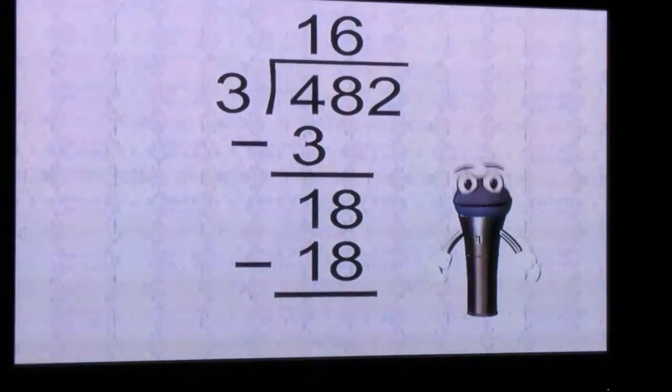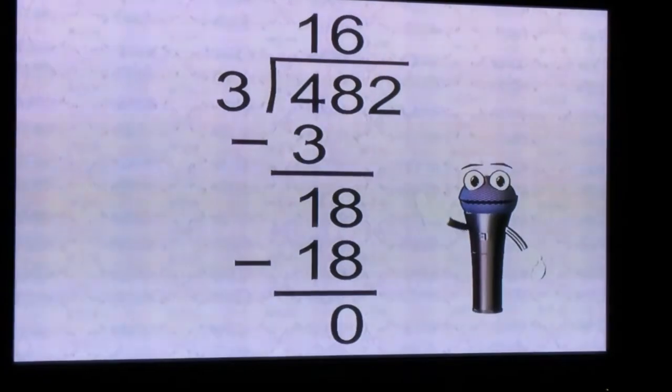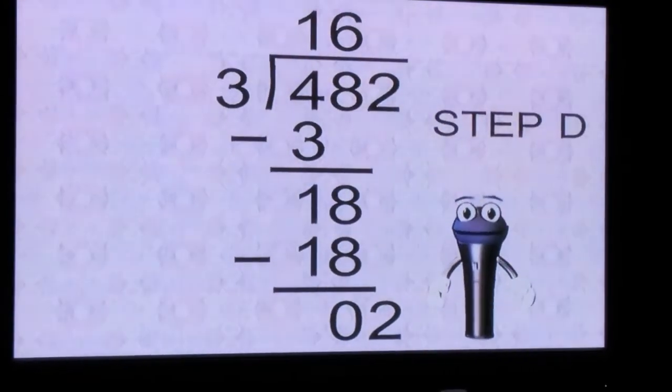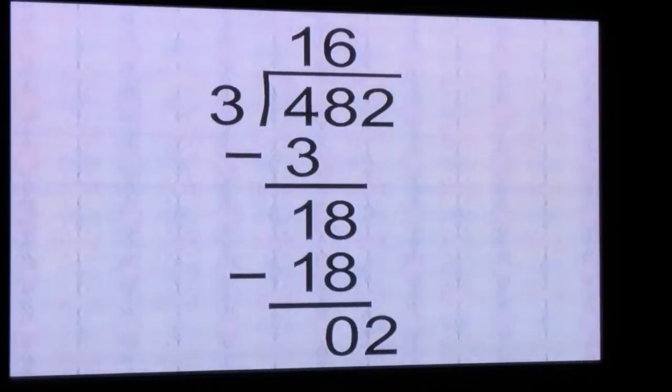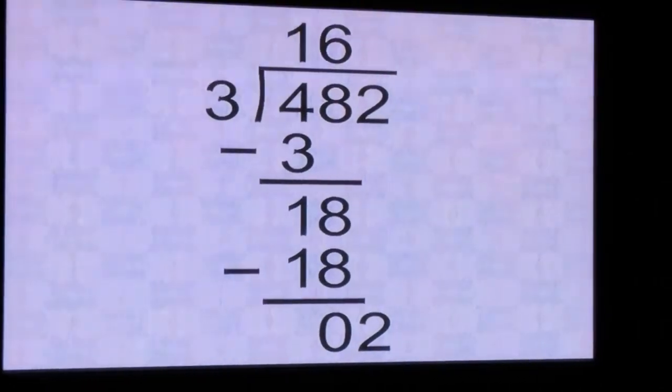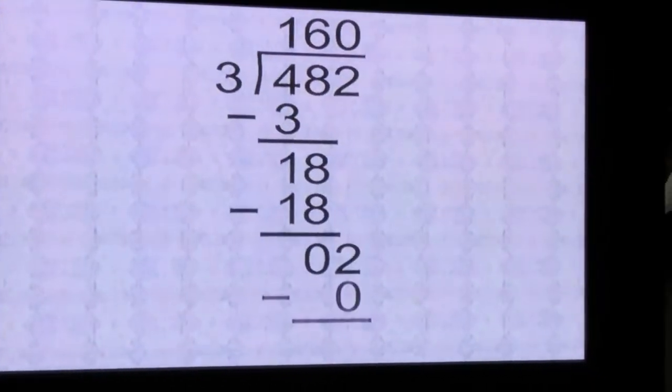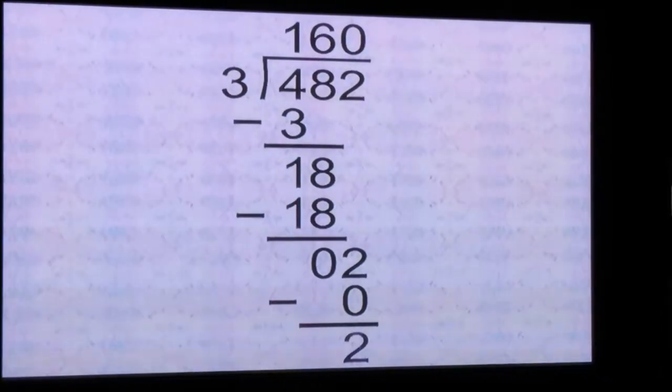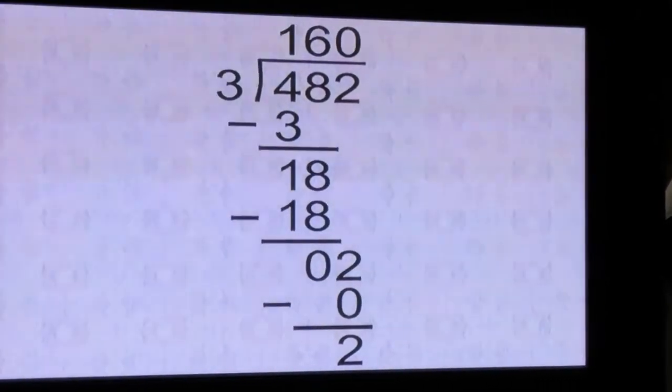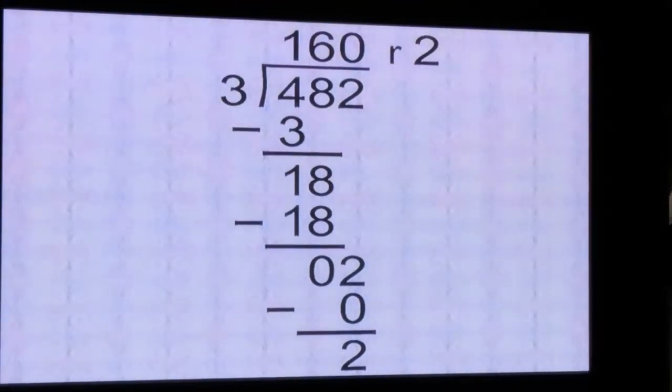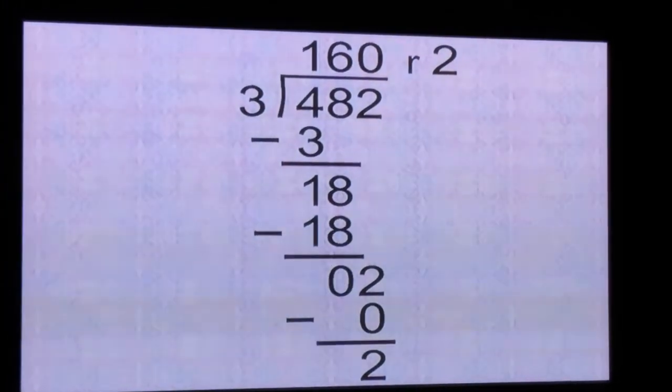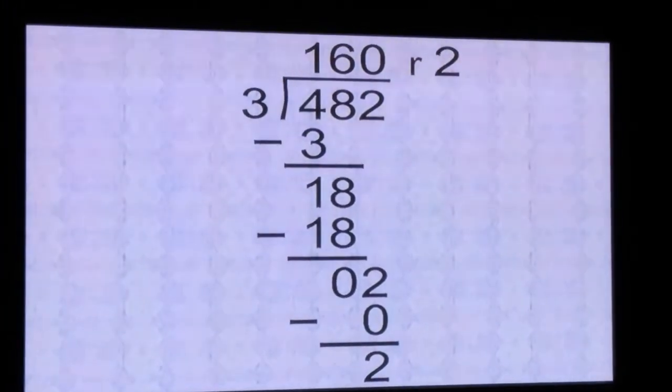When we subtract 18 from 18, we get 0. The 2 is left in the ones place. We bring down the 2. Step D: 3 will not divide into 2 as a whole number, so in the quotient we put a 0 above the 2. Subtracting 0 from 2 still leaves us with 2. 2 becomes the remainder, and we know what to do with remainders. We put them beside the quotient. The R lets us know that this is the remainder. The answer to 482 divided by 3 is 160 with a remainder of 2.